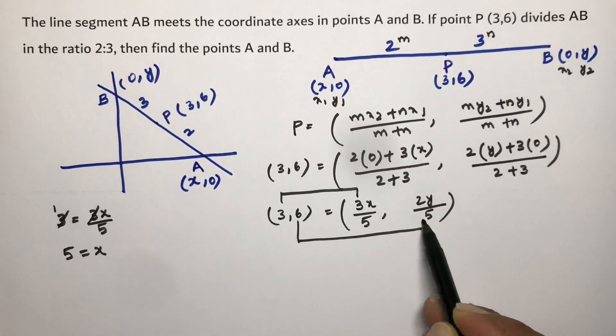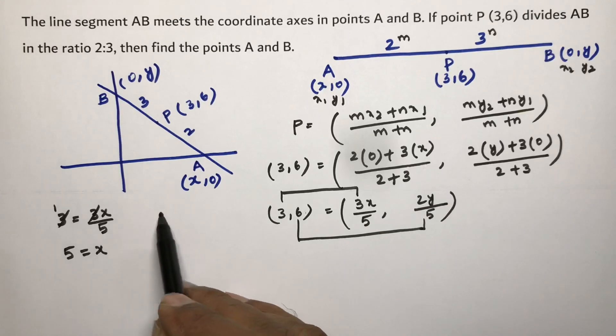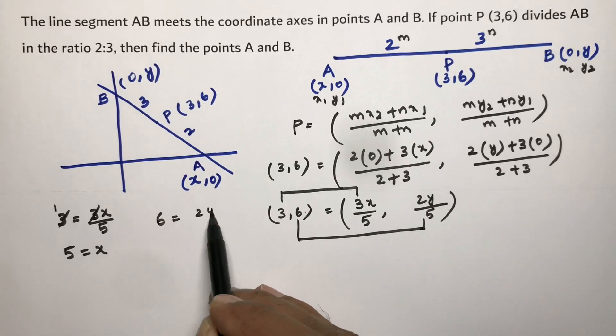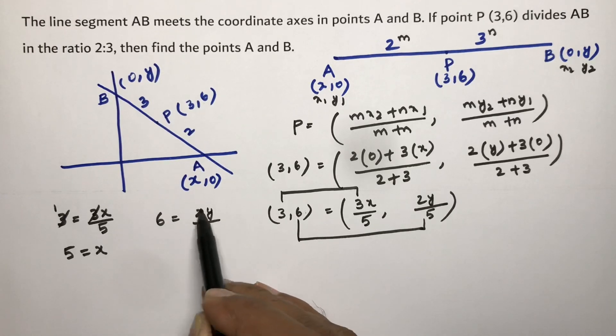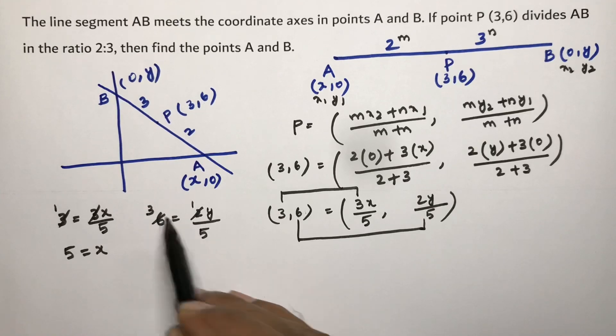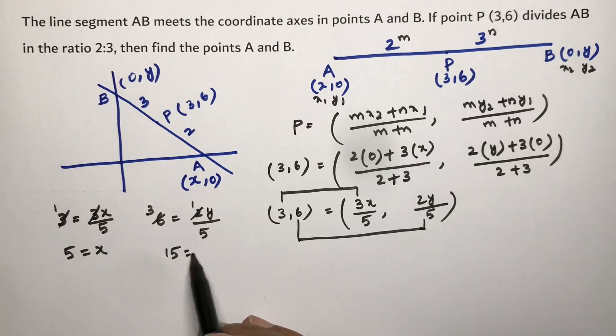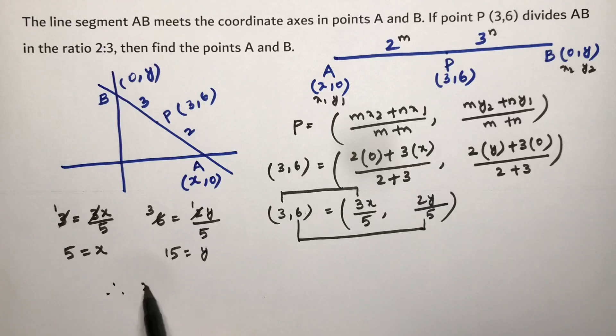6 = 2y/5. 2 times 3... 5 times 3 is 15. Therefore the value of x is 5 and y is 15.